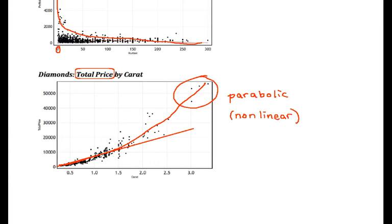So this one doesn't appear all that linear, and we can see that there might be a better model than the linear model.